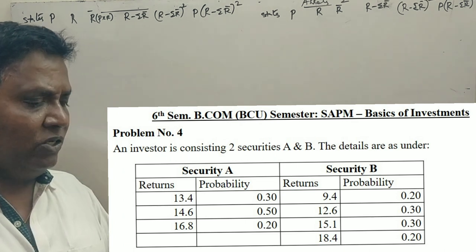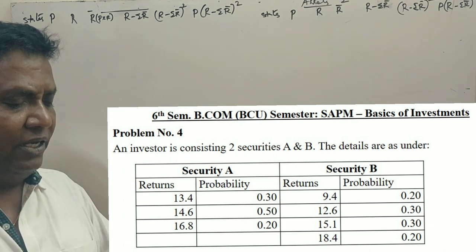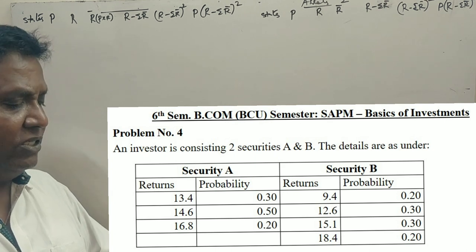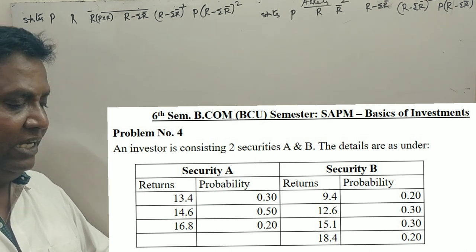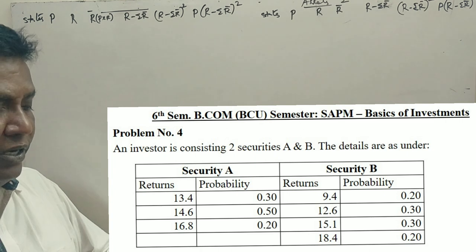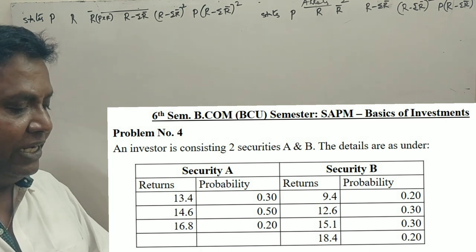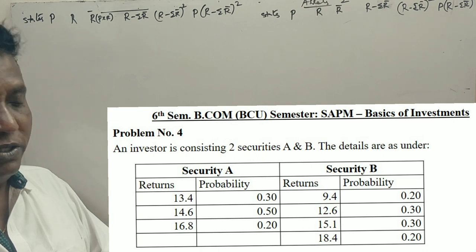An investor is considering two securities A and B. The details are as follows: Security A has returns for 3 years, Security B has 4 years returns and 4 years probability. Question: which security to be chosen for investment?